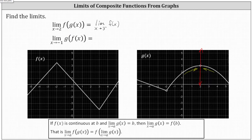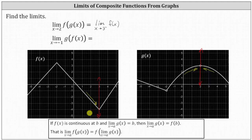Now we find this limit graphically. Looking at the graph of f(x), we approach x equals three from the left and from the right. In both cases, we approach the y-value of negative four. So the limit — whether a general or one-sided limit — equals negative four, which means the limit as x approaches two of f(g(x)) equals negative four.